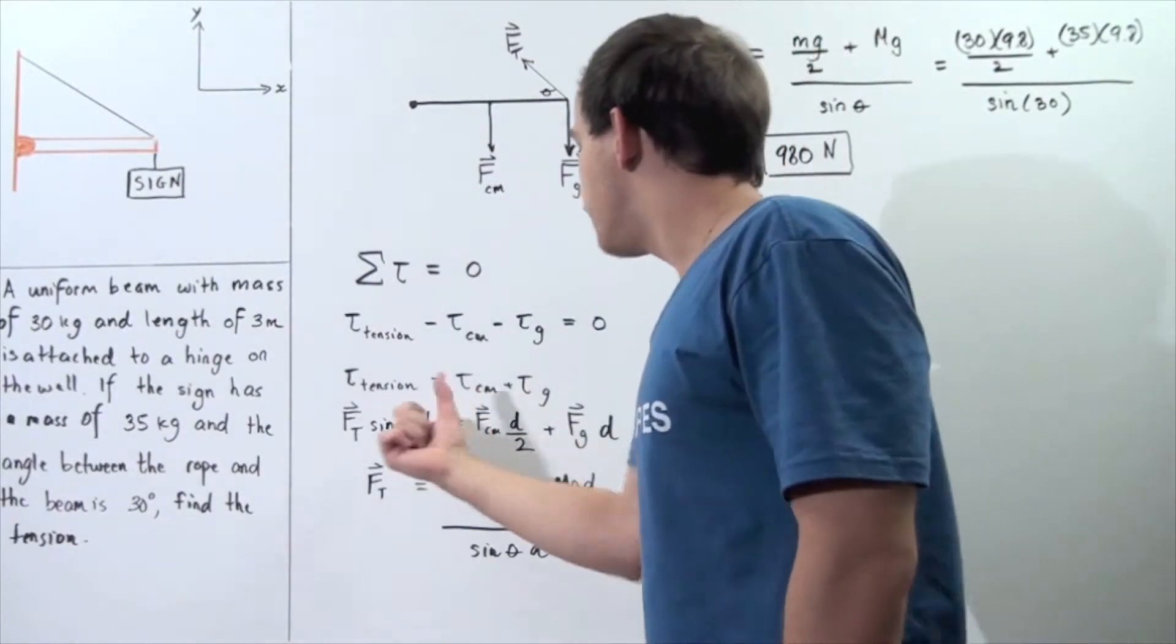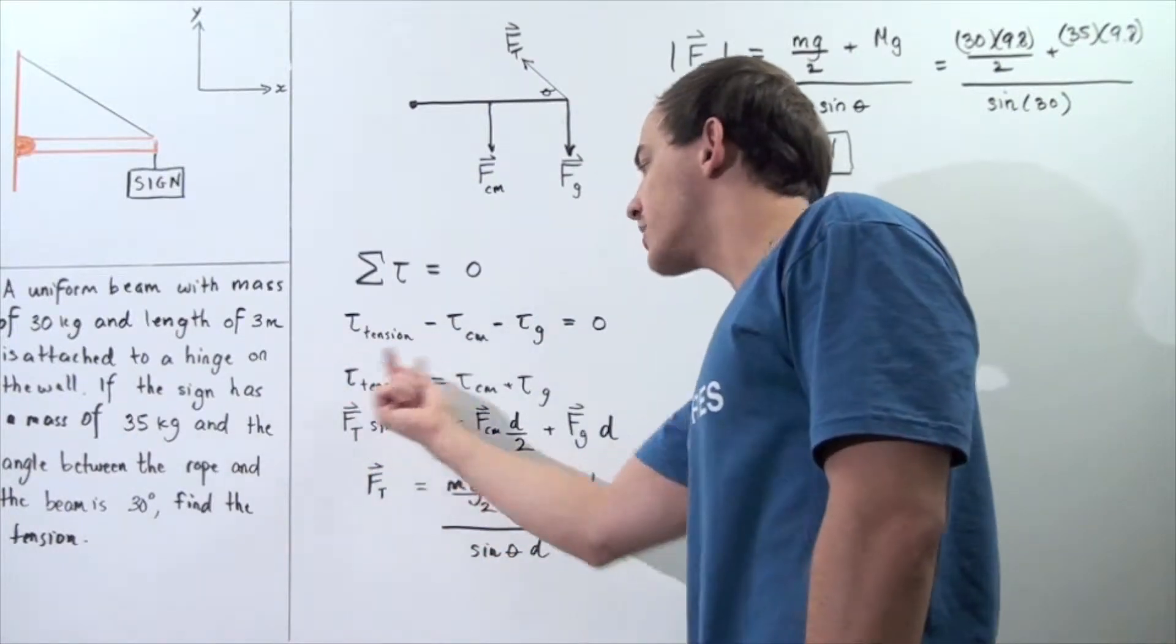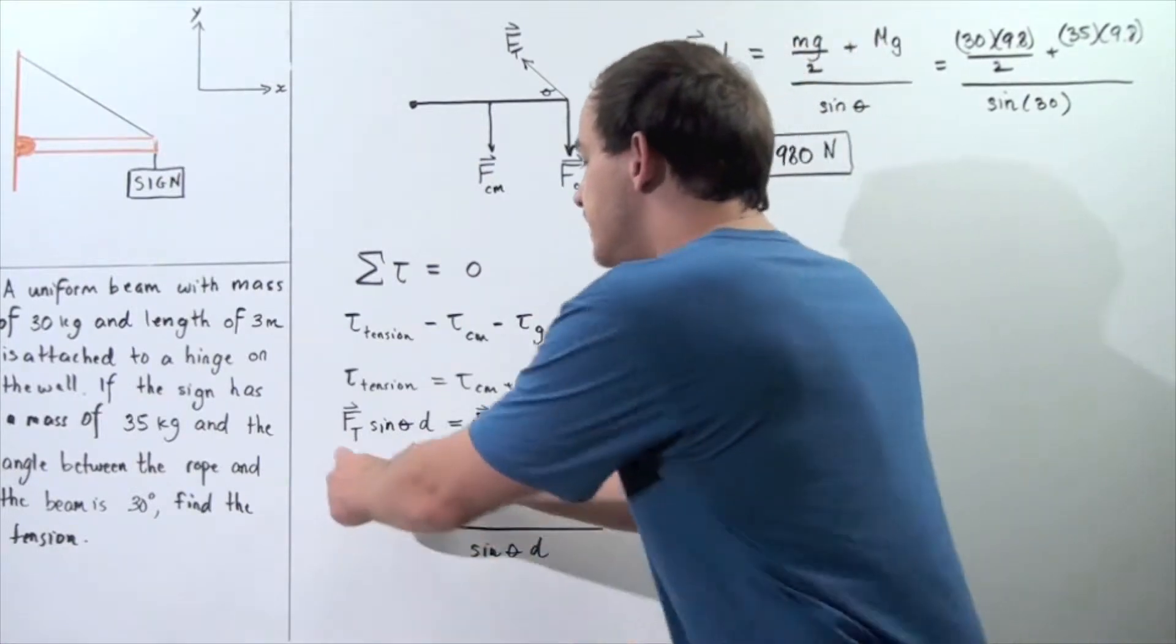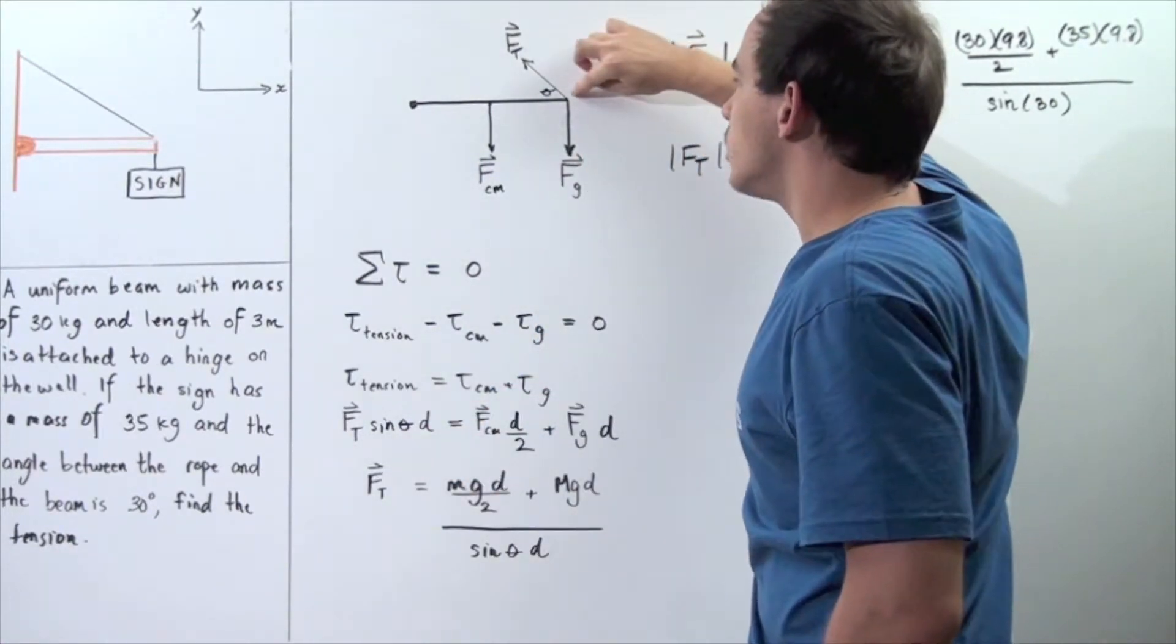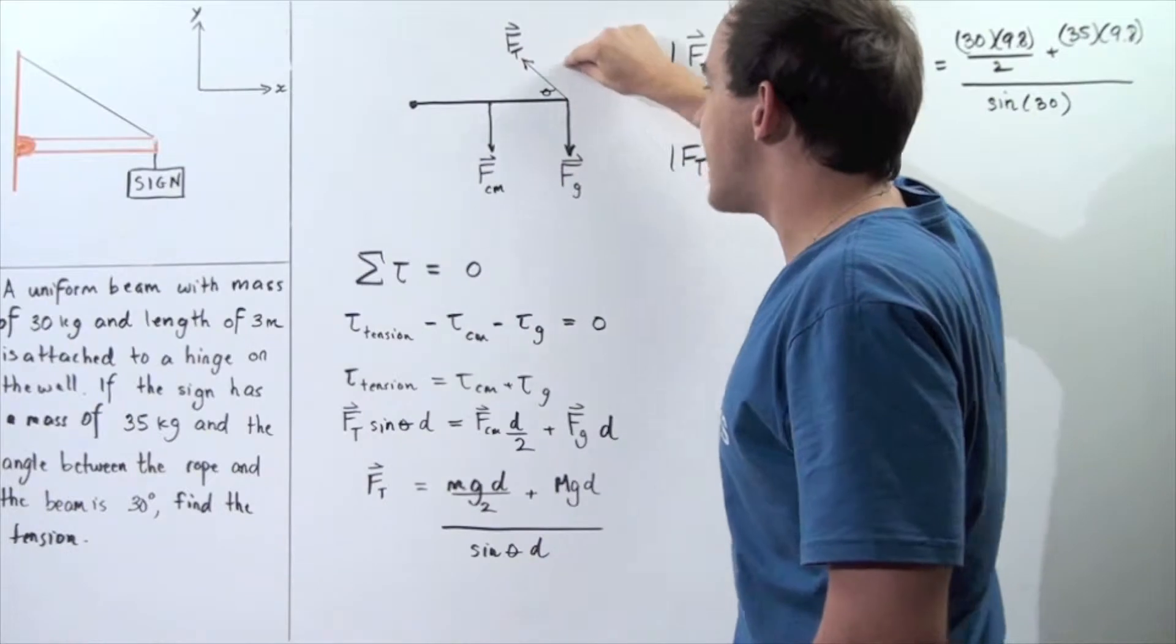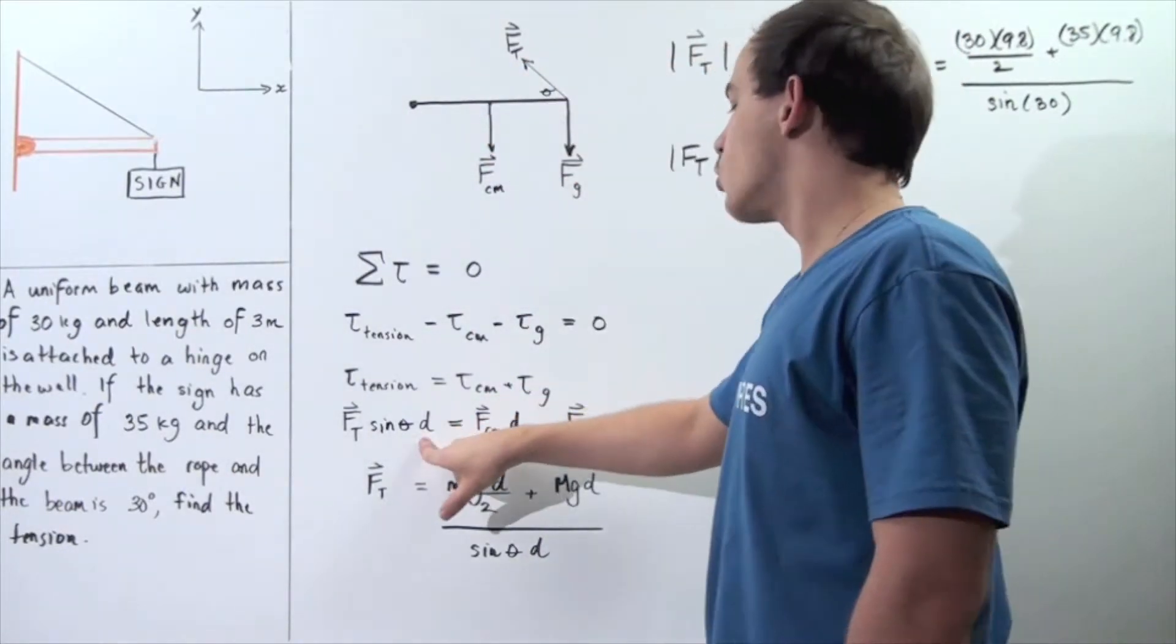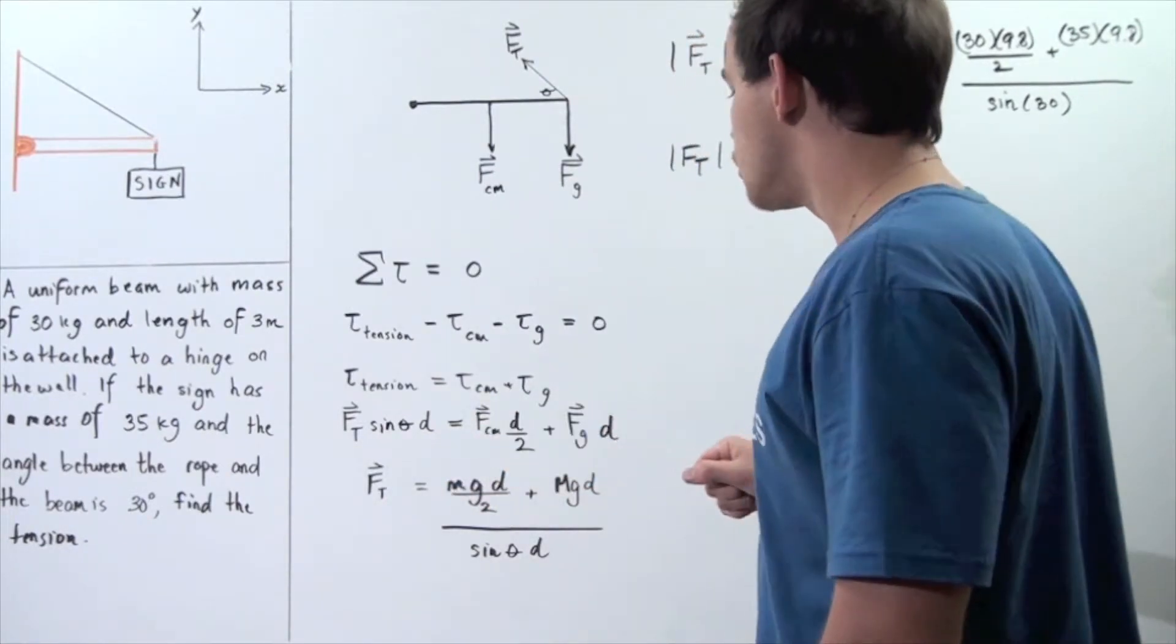So let's begin by replacing our tau tension, torque tension, with the force acting times the sine of the angle theta, because we're looking for the Y component force. So that means sine of the angle theta multiplied by this tension force multiplied by the lever arm. So let's represent the lever arm with the symbol D. And that equals to,